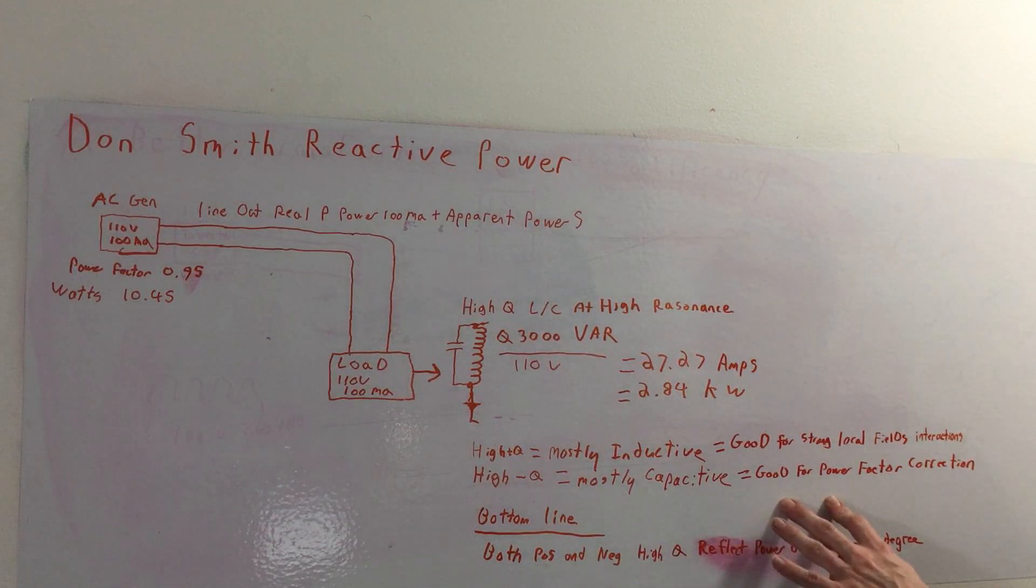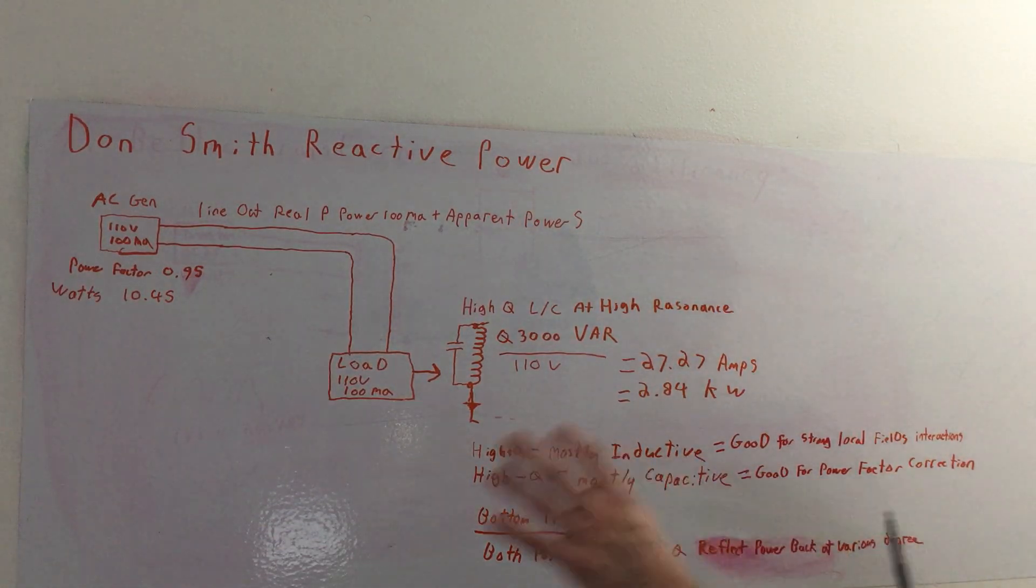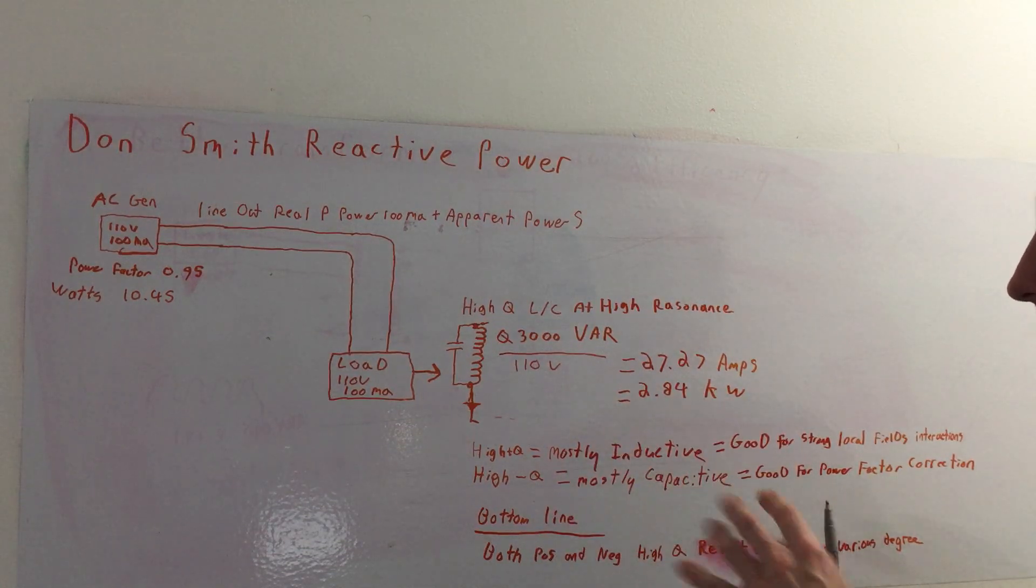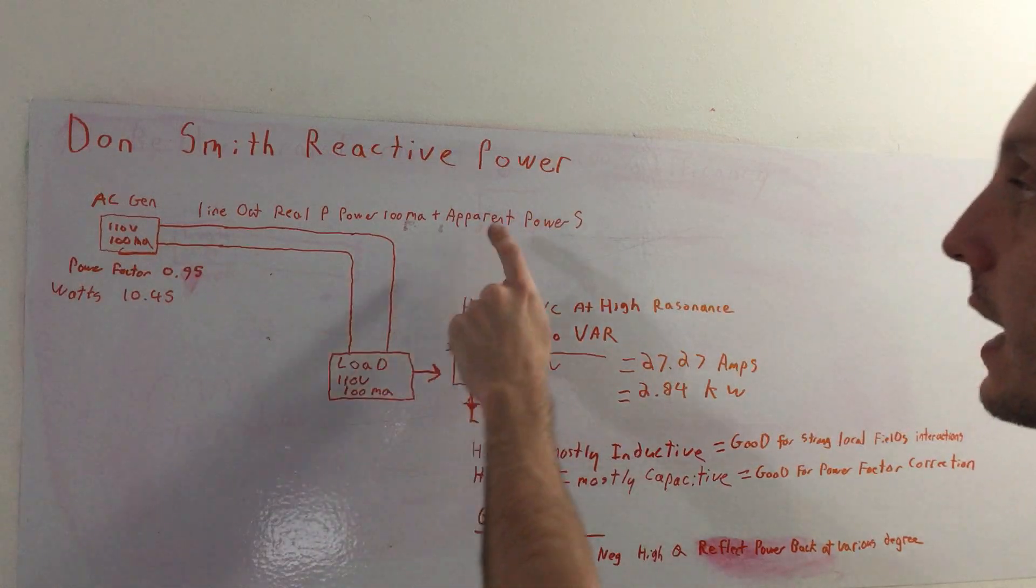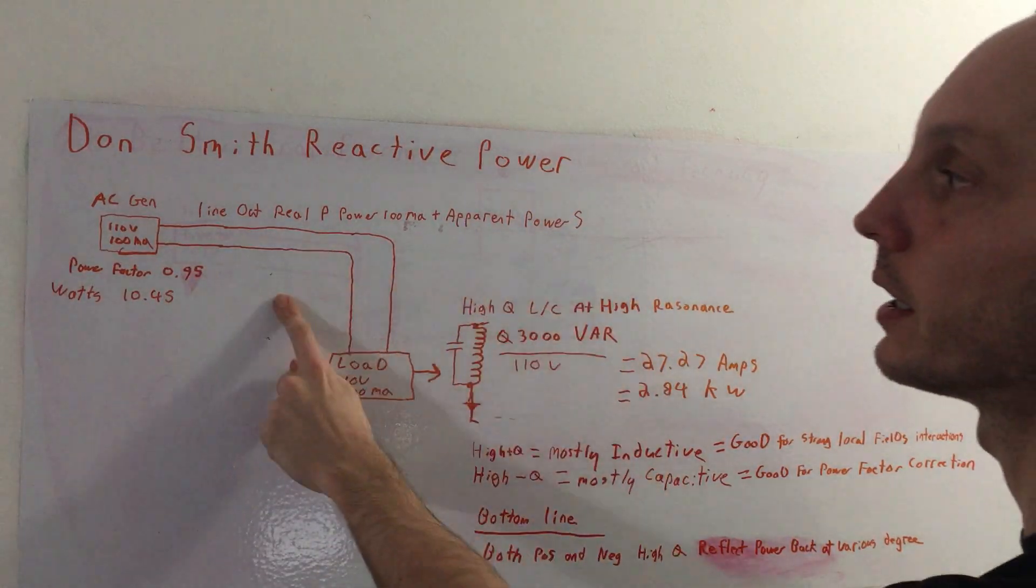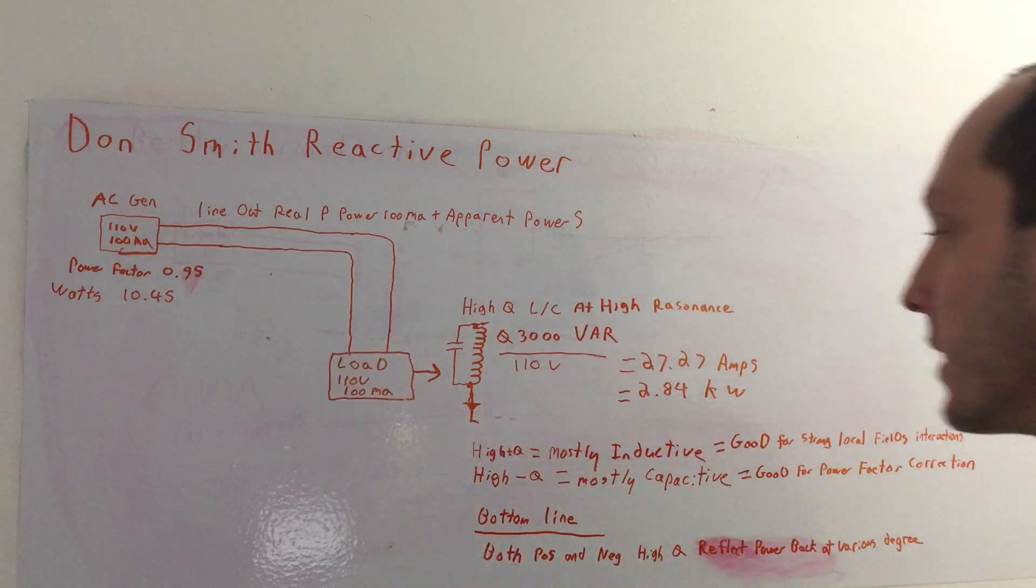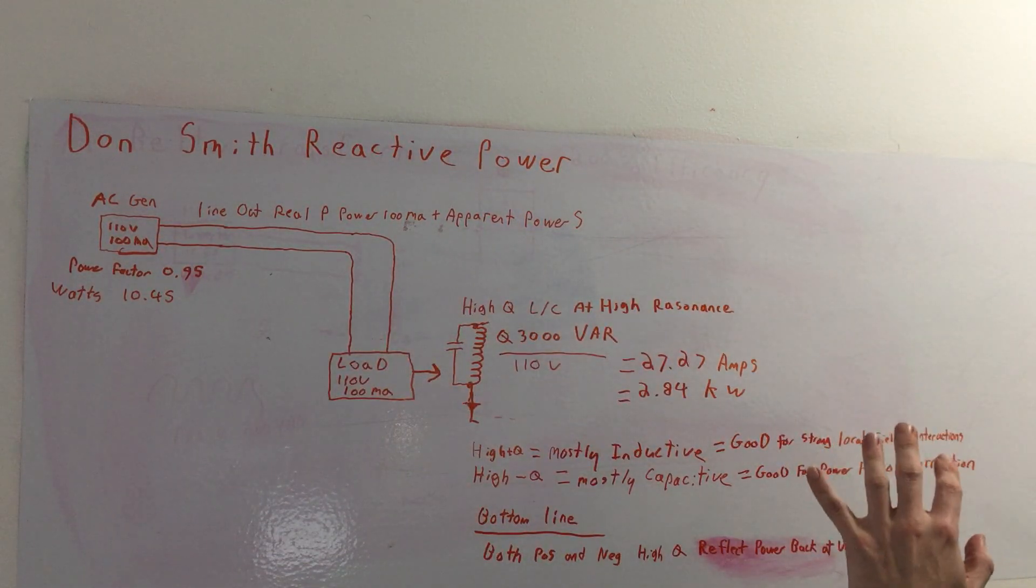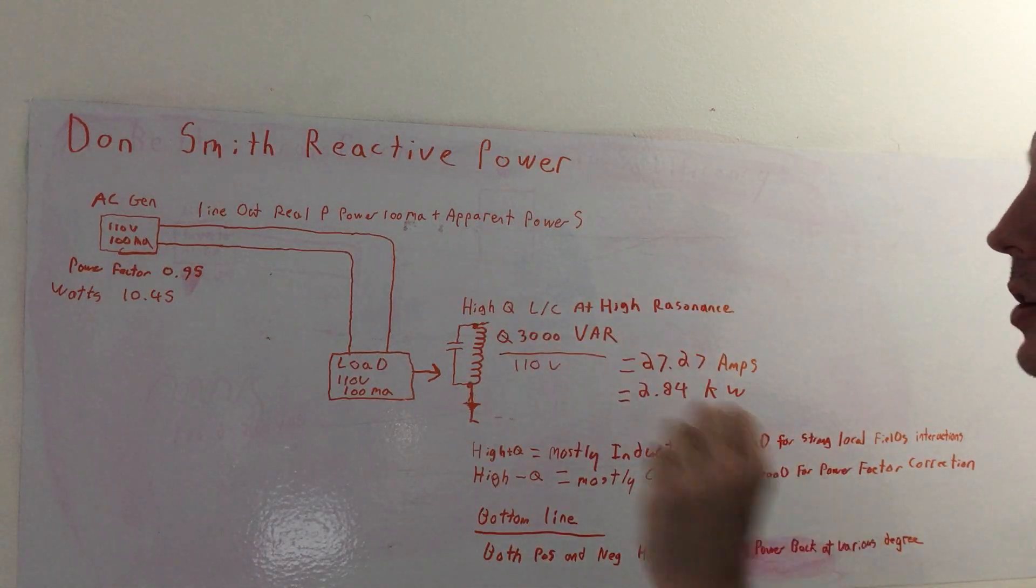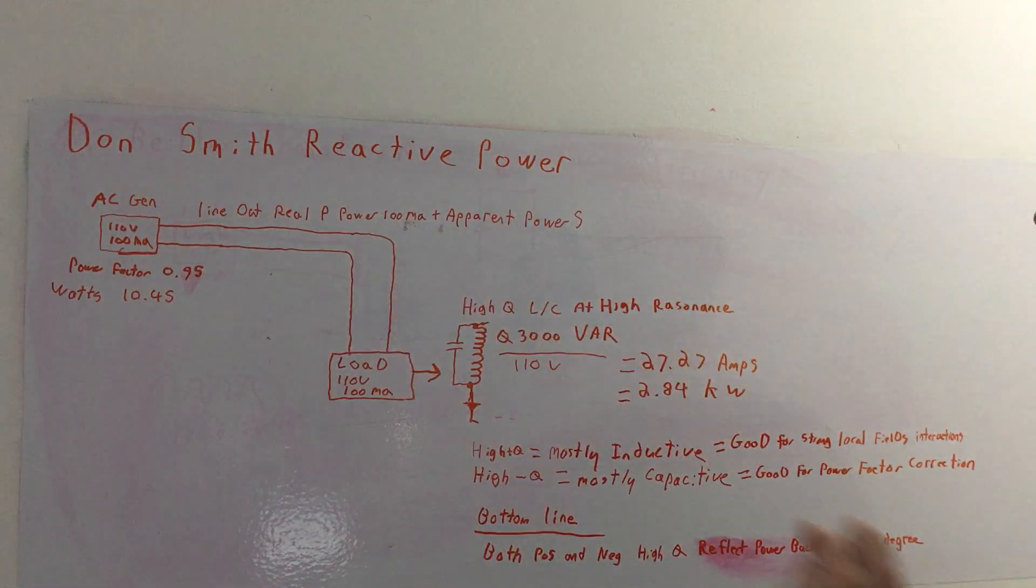This is good essentially for power factor correction. It gives you a little bit more efficiency on running your load. But essentially bottom line is both systems, whether it's positive or negative Q, will reflect power back as apparent power S into the grid or the generator's input essentially. That's just the nature of reactive systems, and the generation or the plant needs to accommodate for that possible apparent power without blowing anything up.